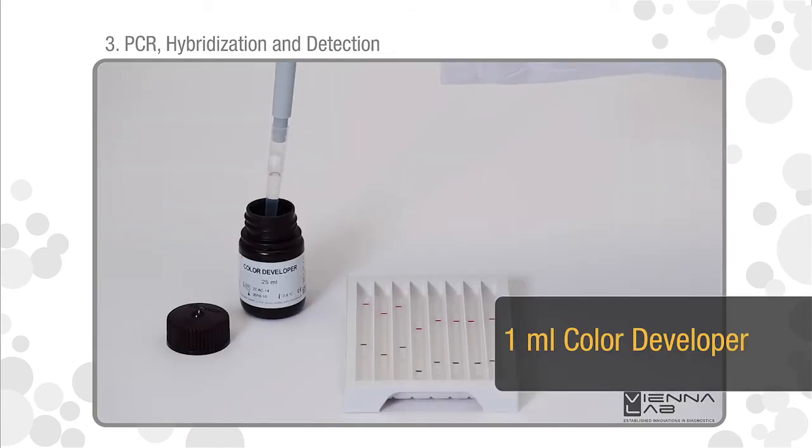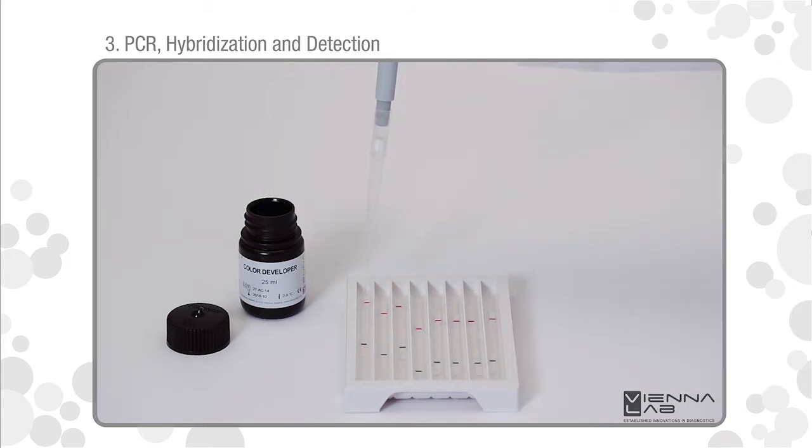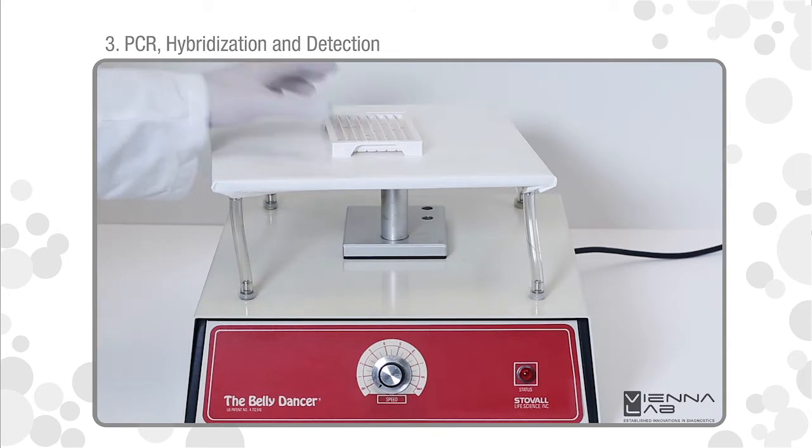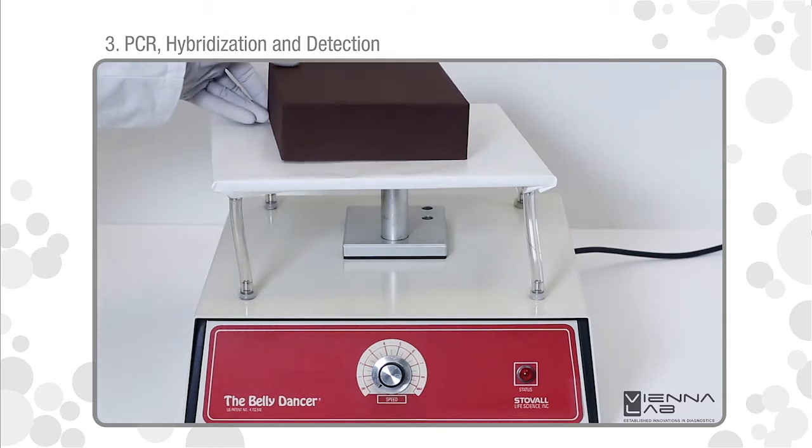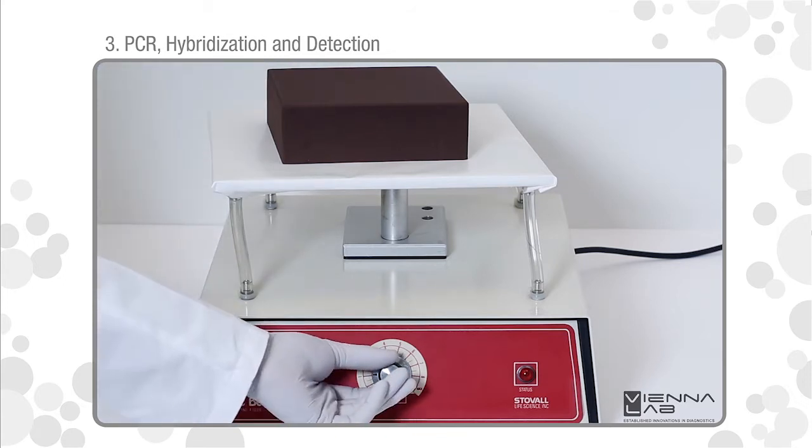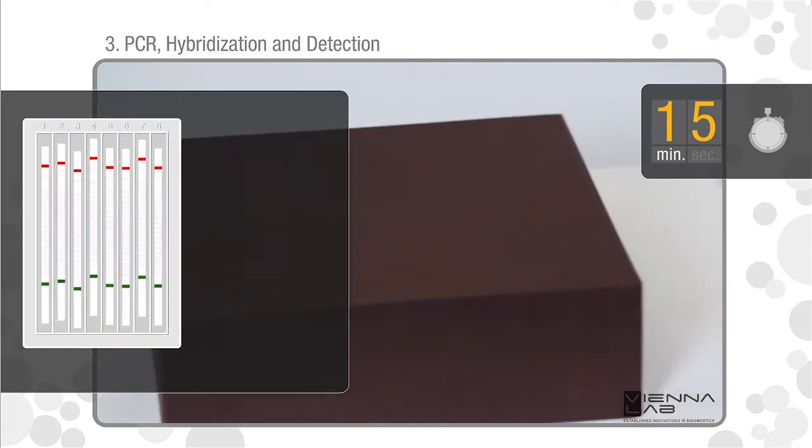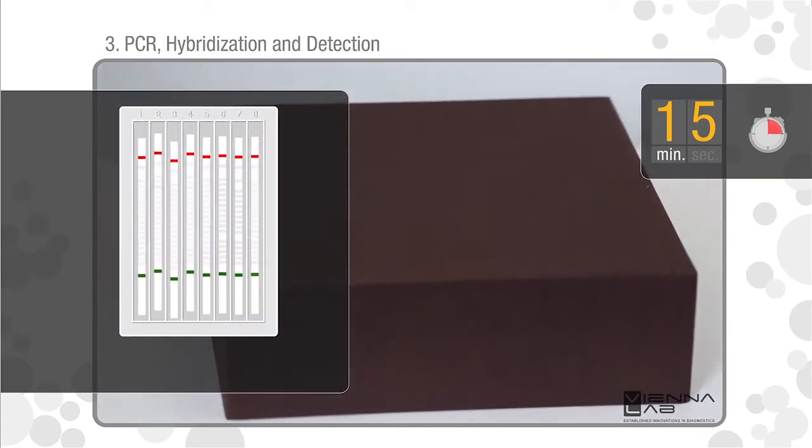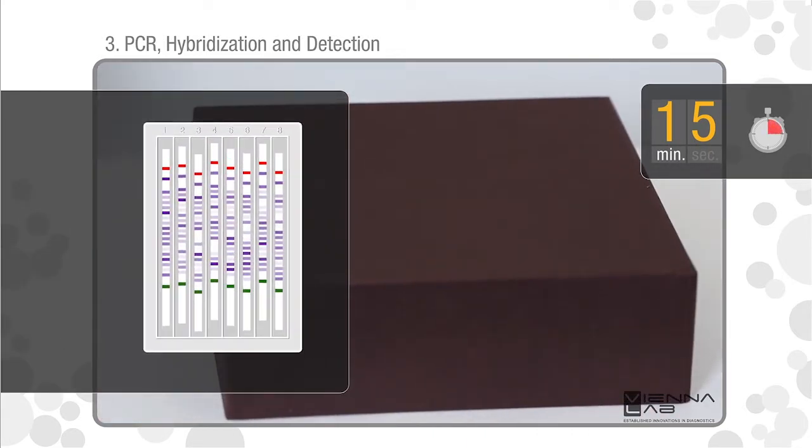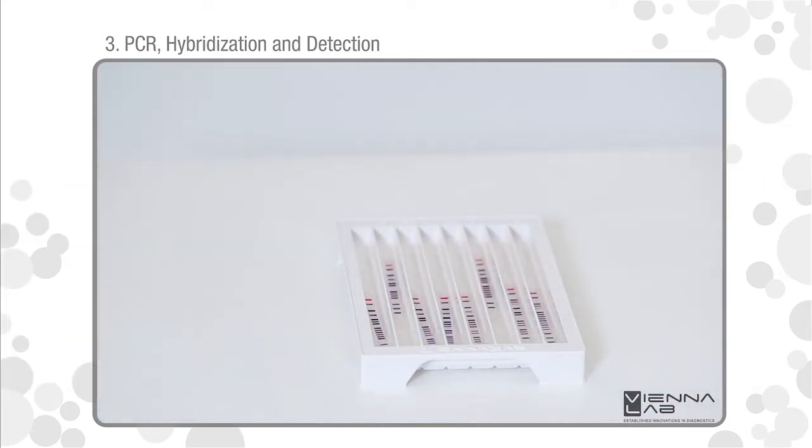Add one milliliter color developer. Incubate for 15 minutes at room temperature in the dark on a rocker or orbital shaker. A purple staining will appear upon positive reaction.